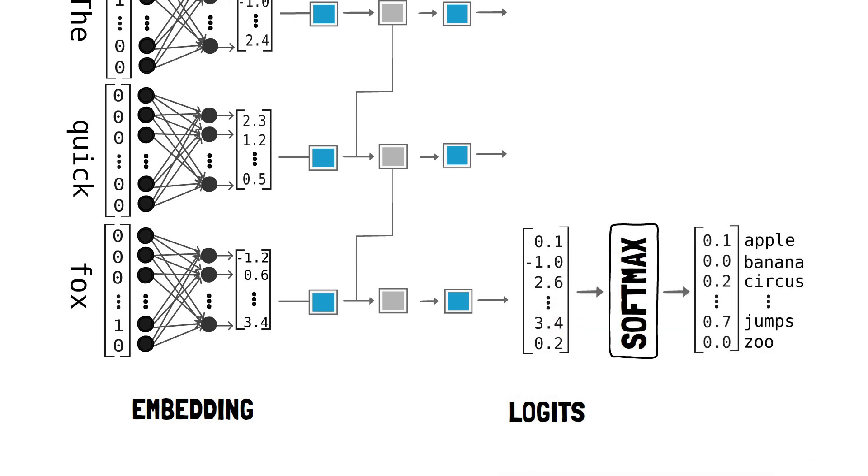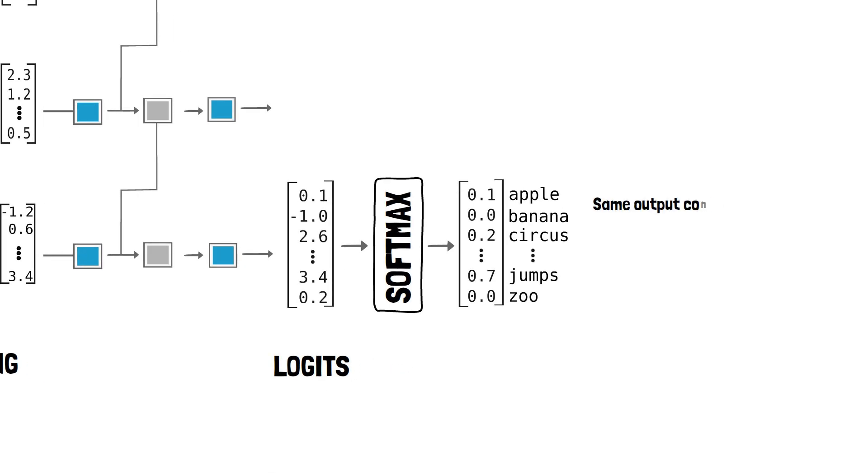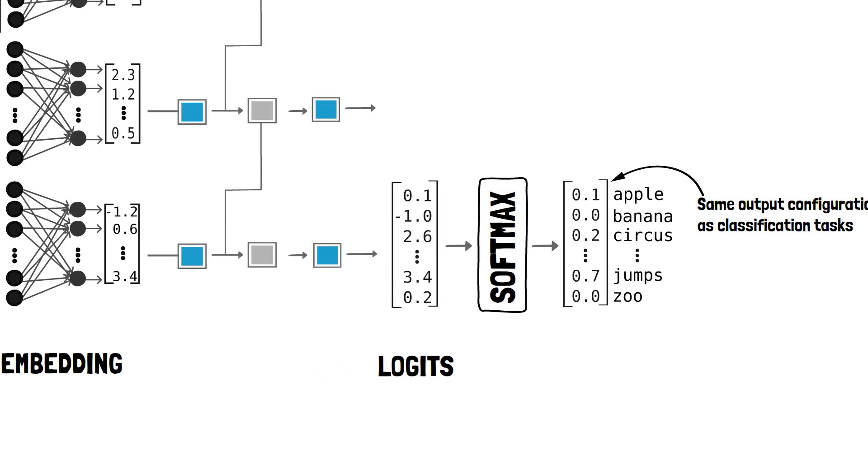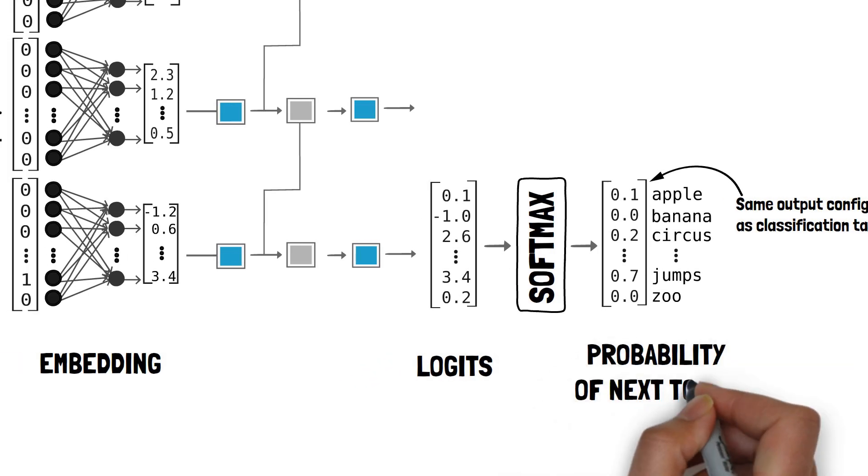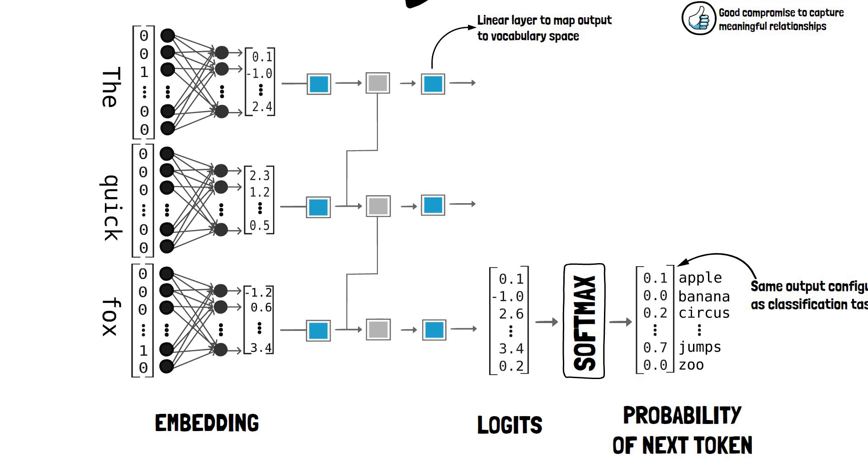The output of the model after processing the sequence is a vector of logits that we can then pass through a softmax activation. This output configuration should look familiar as it's basically the same we used for classification tasks, where we are predicting the probability that a certain input belongs to a certain category. Except here we are predicting the probability of each possible next word in the dictionary to finish off the input sequence.